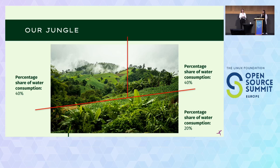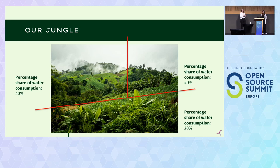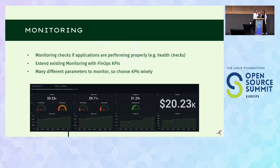Going back to our jungle: we now have a percentage share of the water consumption. We've added 20% to the small plants area because there are a lot of weeds and they don't need that much water. For the other two parts we added 40% each. We know a lot about our jungle now — looks pretty good, right? We can survive. But we want to evolve with our jungle: we want to know when to harvest our plants and how they grow. And for that we need monitoring — it's the same in the cloud.